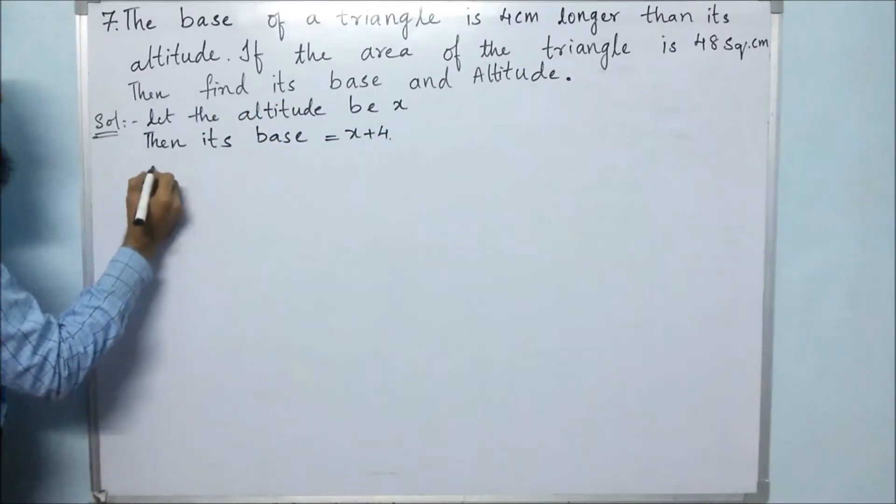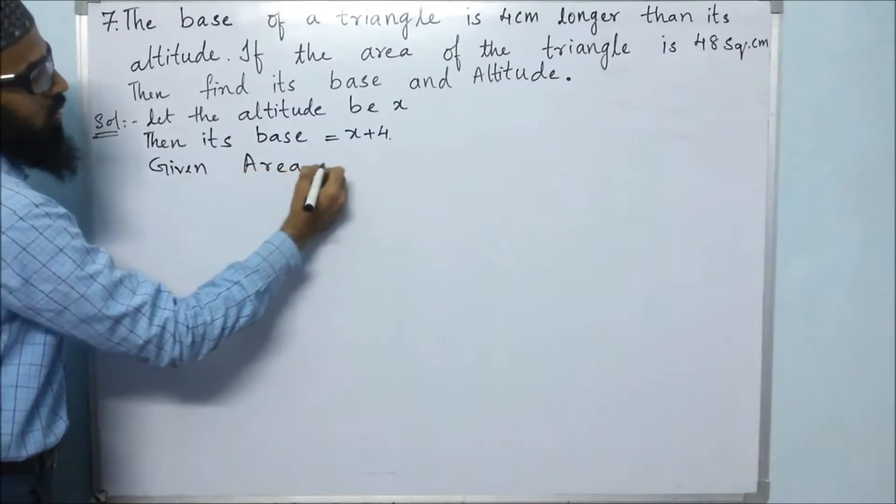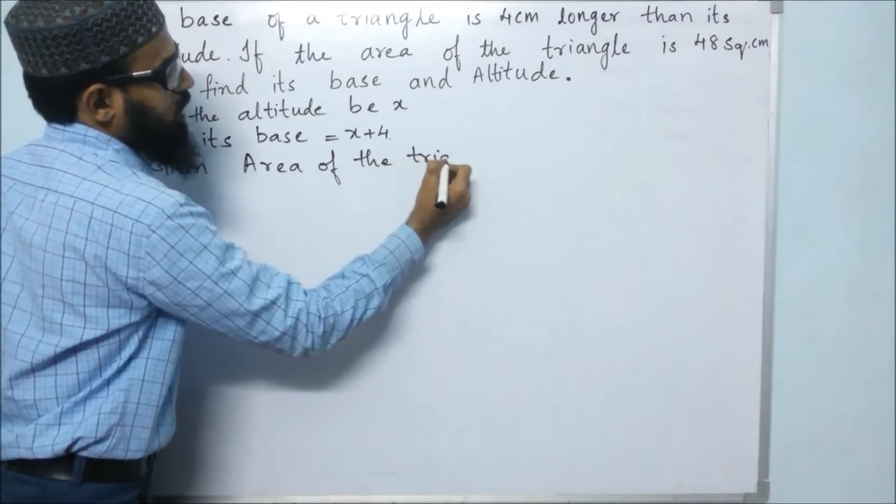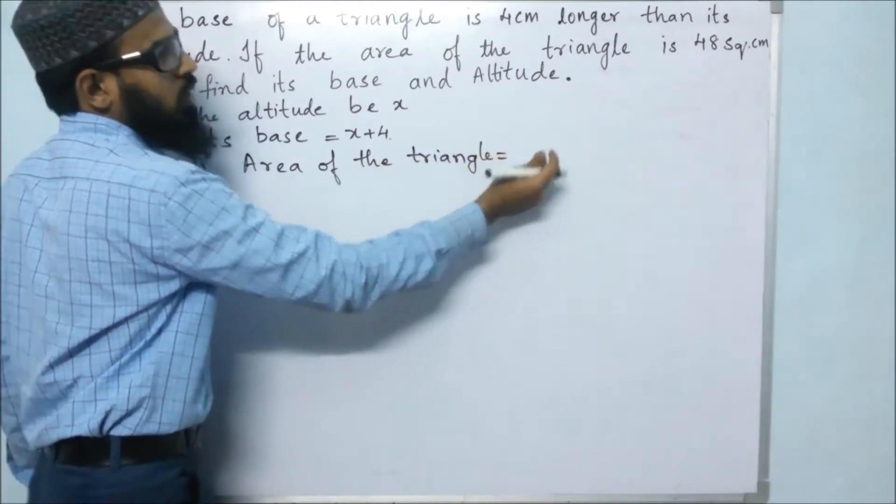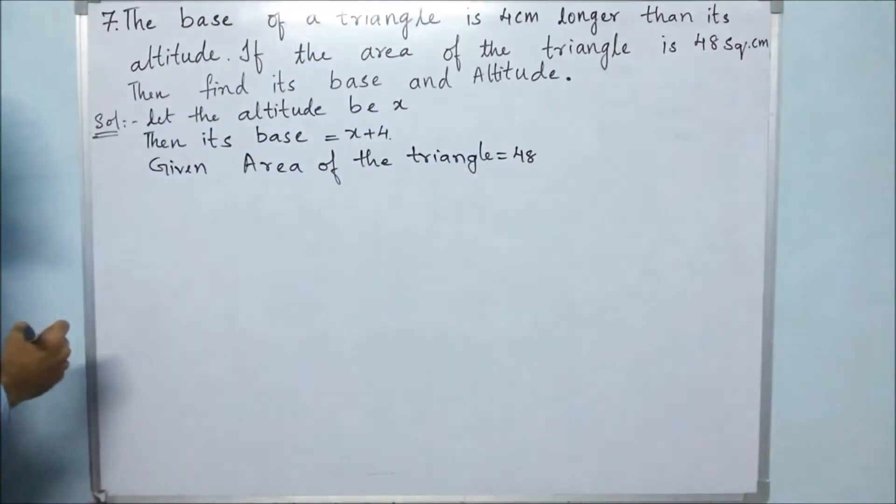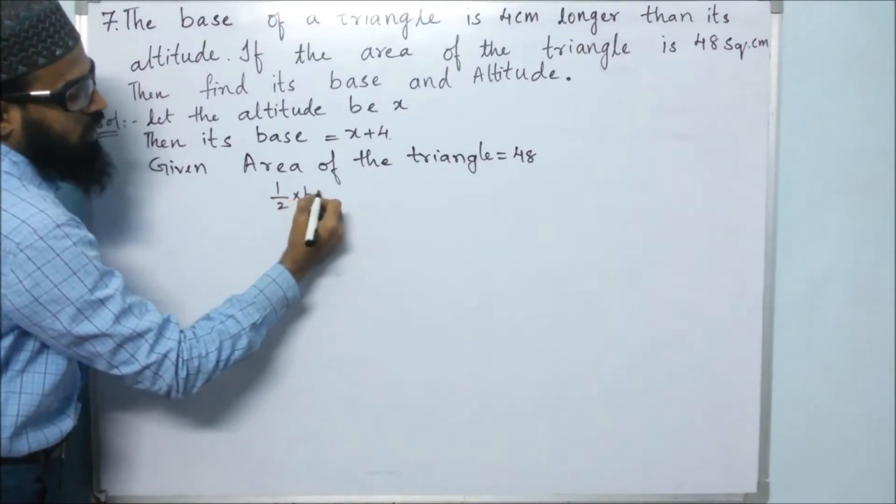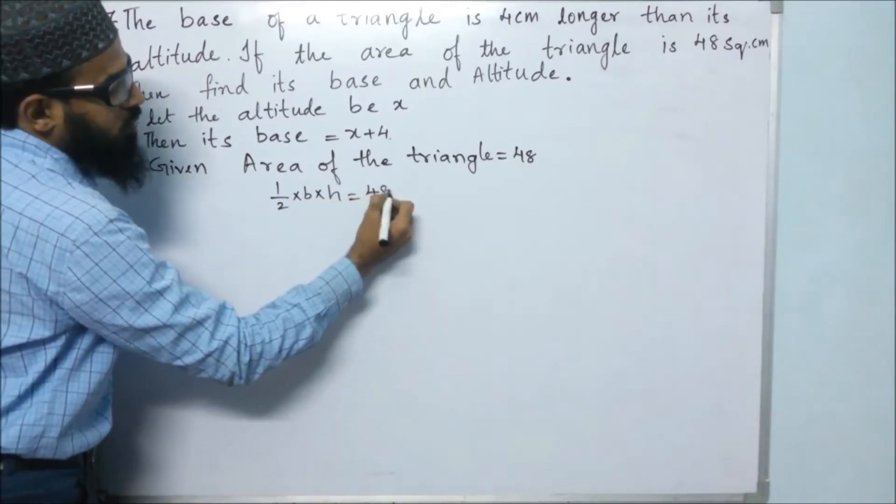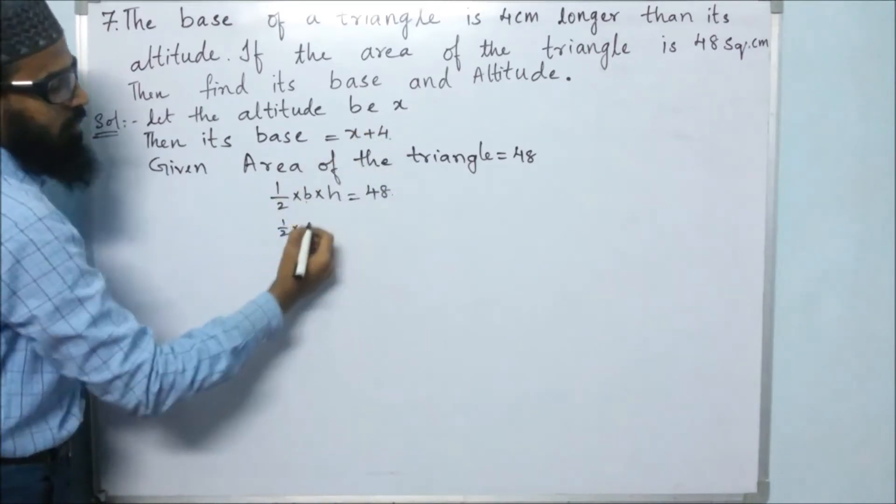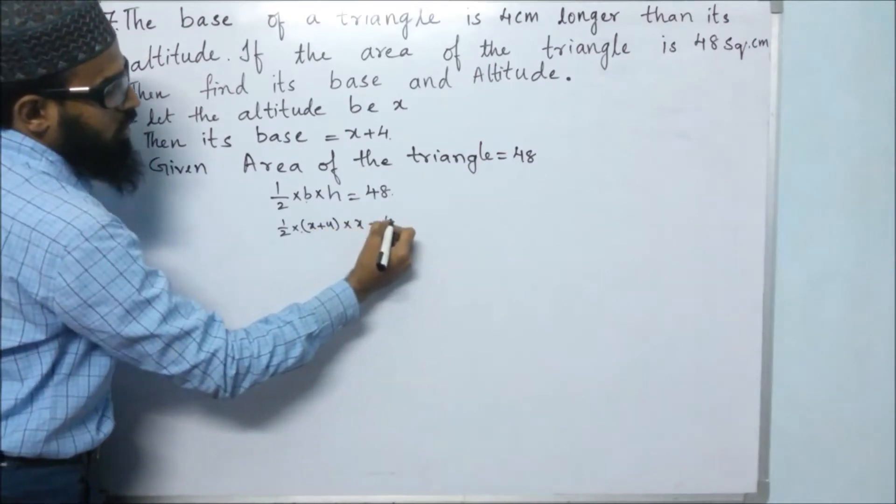And they have given area. So given area of the triangle is 48 square cm. Then next, we know the formula of area of triangle: half into base into height. What is base? Base is x plus 4, and height is x equals to 48.